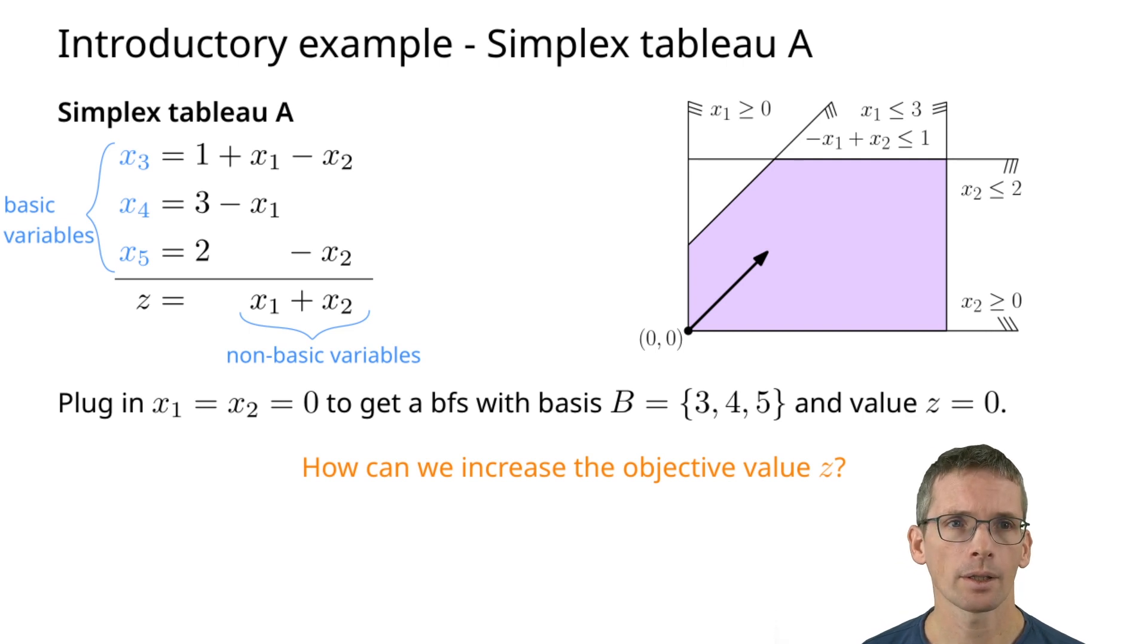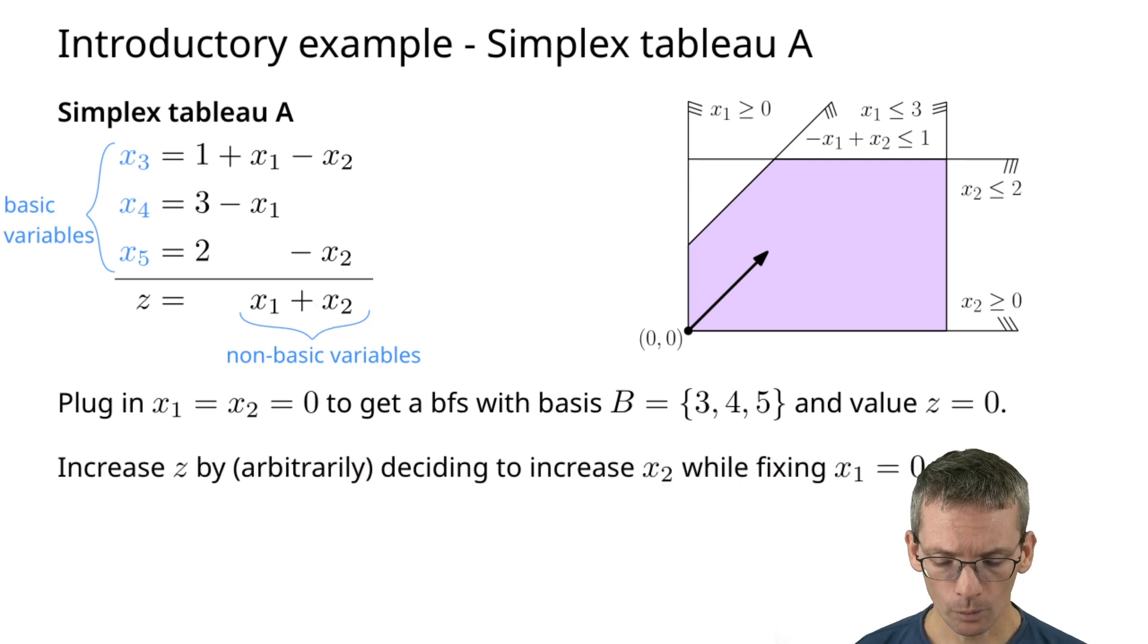Let's say x2, we could have taken x1, but let's take x2. We want to make x2 non-zero, meaning we're going to make it a basic variable. And for that we will have to make one of the basic variables a non-basic variable.